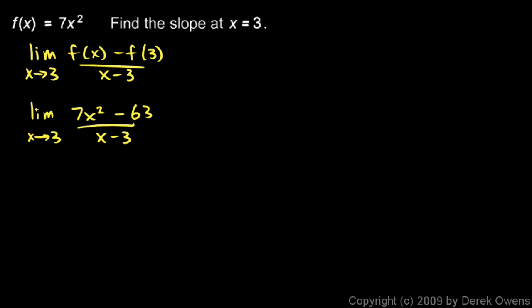Now, can we take the limit? Well, if we put in a 3, here we get a 0 over 0, but we can simplify the expression. So we have the limit as x approaches 3. I'm going to factor out a 7, and I get x squared minus 9 over x minus 3.